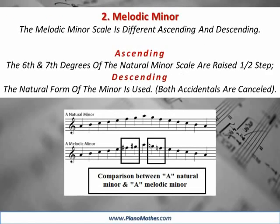The melodic minor scale is different ascending and descending. Ascending: the sixth and seventh degrees of the natural minor scale are raised a half-step. Descending: the natural form of the minor is used, and both accidentals are cancelled.